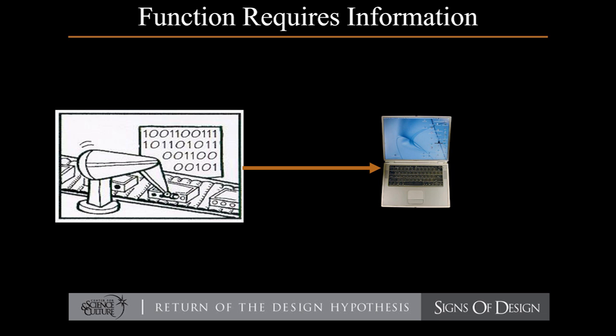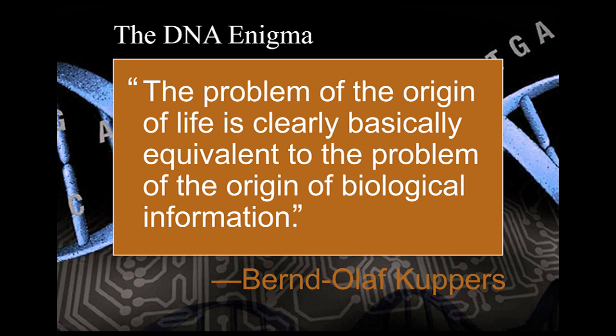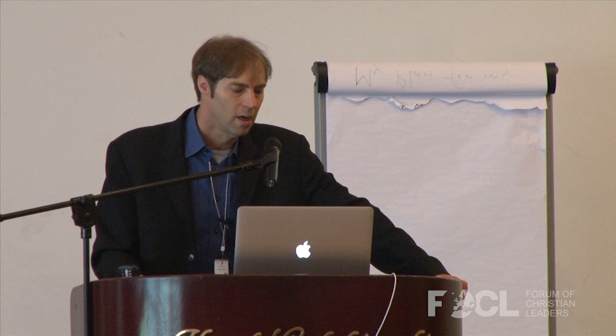When I was a college professor, I used to ask my students: if you want to give your computer a new function, what do you have to give it? Obviously the answers would come back: code, information, program, and they're all correct. It turns out the same thing is true in life. If we want to build a new animal from a pre-existing form, we need new information — much of it genetic — that needs to be provided by the evolutionary process. And if we want to build life in the first place from simpler pre-existing chemicals, we also need information to account for and build the proteins necessary for life.